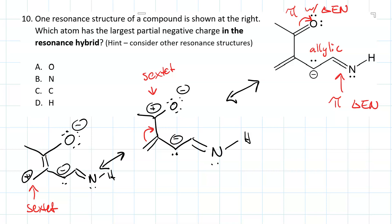So far, the carbon that was negative in the initial structure has more partial negative charge than the oxygen does.